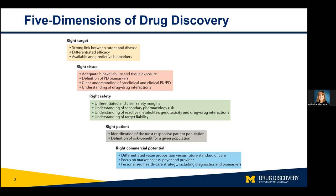So all of these things really need to be considered right at the outset of a drug discovery program. Drug discovery programs are long and they're expensive — 12 to 15 years, one and a half to two and a half billion dollars, depending on which estimates you believe. They're just not projects you want to embark upon if you're not confident that all of these things are going to be correct at the end of the day. You won't be able to answer all of these questions right at the outset, but they should all be considered.